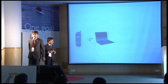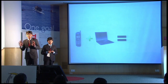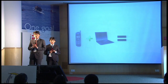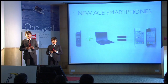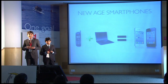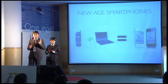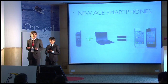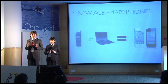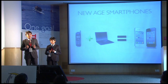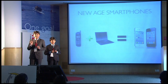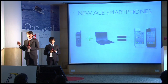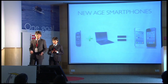A mobile phone and a computer together form what is called the new age smartphone. These smartphones are powerful computers. For example, the iPhone 5 has an A6 processor running at about 1.6 gigahertz, which is as fast as most of the desktops we have at home.